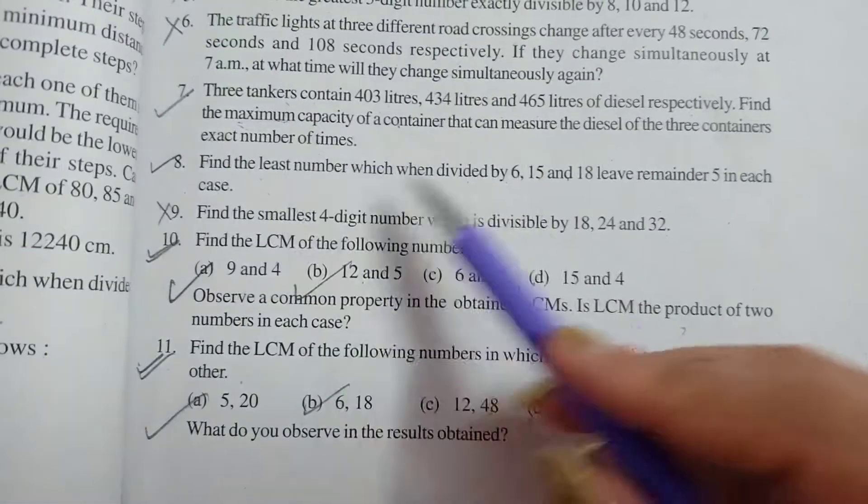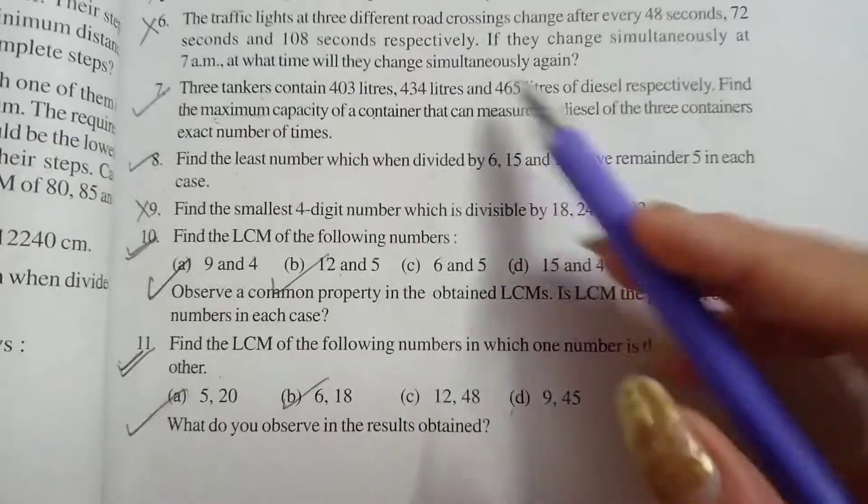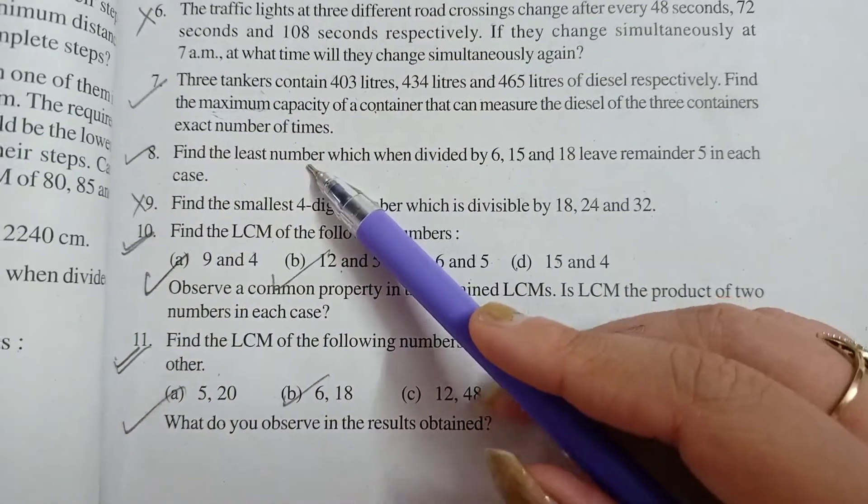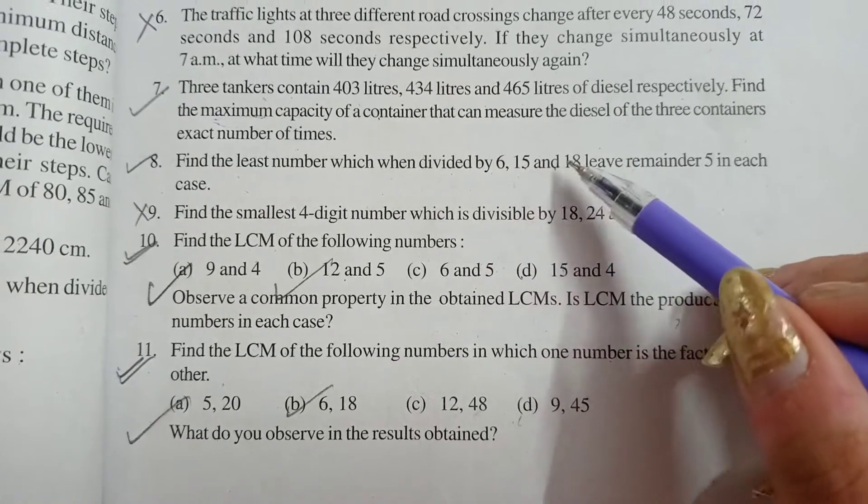Find the least number which when divided by 6, 15 and 18 leaves remainder 5 in each case. We need to find the least number when we will divide it separately by 6, by 15 or by 18.